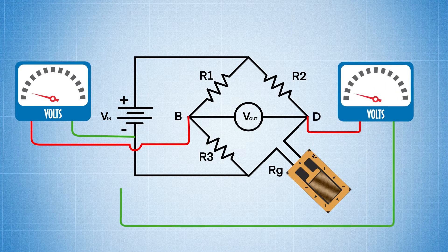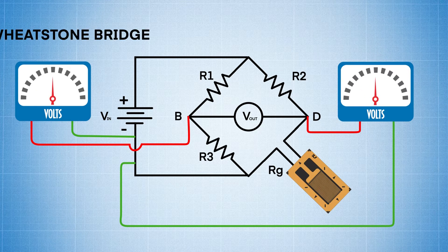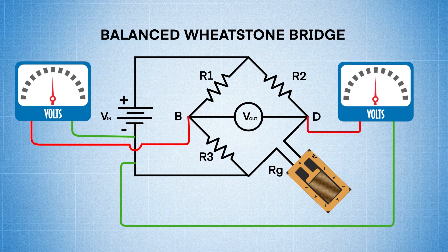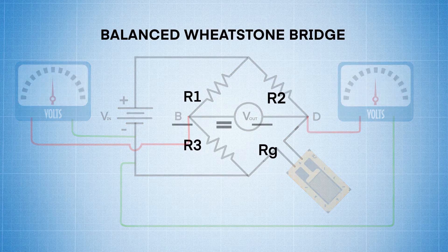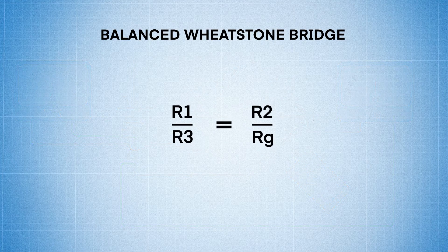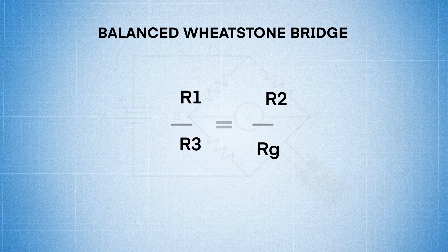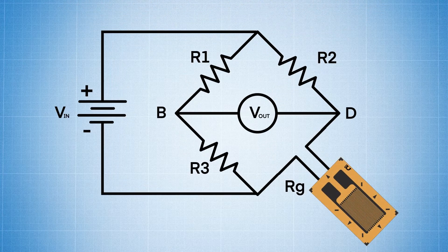Now, when you measure the voltage between point B and the negative side of the power source, and point D and the negative side of the power source, if they are the same it means that you have a balanced Wheatstone bridge. To have a balanced bridge, the ratio of R1 over R3 should be exactly equal to the ratio of R2 over RG.